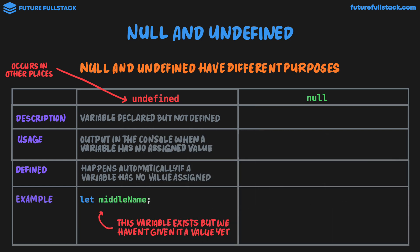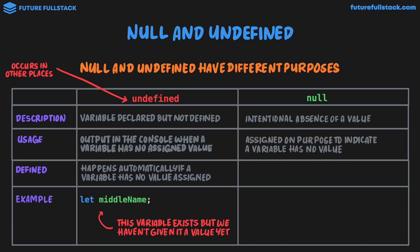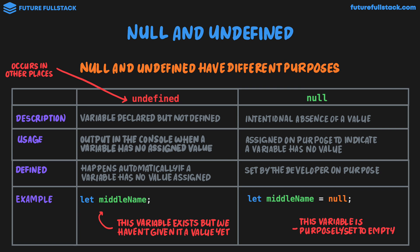Let's now look at null. Null represents the intentional absence of a value. Its usage is it's assigned on purpose to indicate a variable has no value, and it's set by the developer on purpose. It's different to undefined in that as a developer, we actually want to set some values to null. Undefined is about trying to access a value in a variable and being told that the variable has no value. Whereas with null, we specifically as a developer want to say that this variable doesn't actually have a value. For example: let middleName = null. The variable is purposely set to be empty.